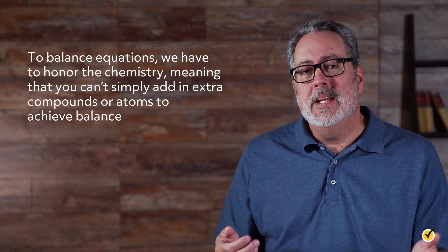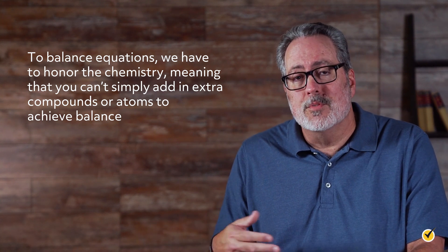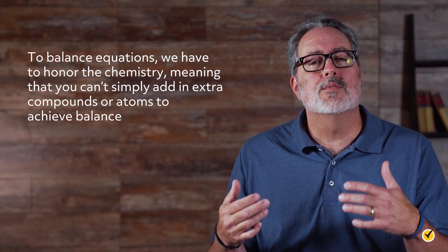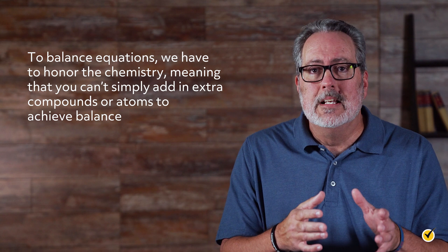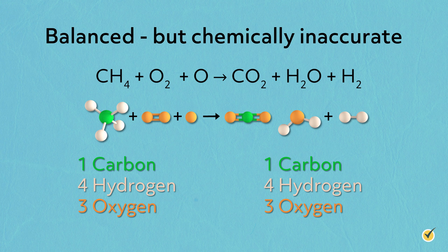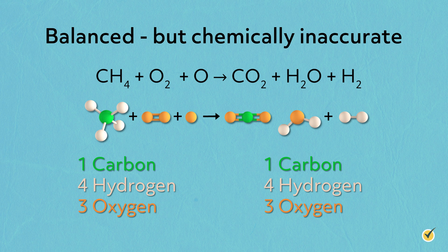Meaning you can't simply add in extra compounds or atoms to achieve balance. This is because, of course, the equation must still reflect the chemistry that actually takes place. So for example, while this equation is technically balanced in that there's the same number of each element on either side of the reaction, it's chemically inaccurate. This reaction doesn't produce H2 gas and certainly doesn't use a lone oxygen atom as a reactant.